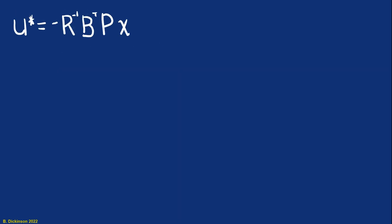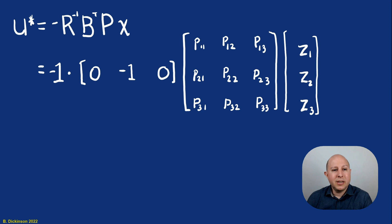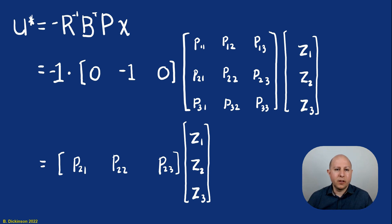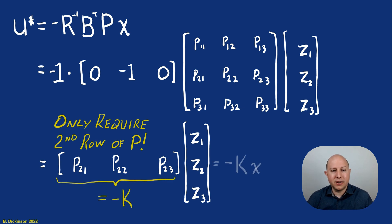There's our optimal control formula. And really what's needed is based off of what's in that R matrix and B matrix. When you multiply R inverse B transpose P together, notice that we just have the second row of P. We don't actually have to evaluate all of the elements of P with the polynomial substitution. We just need to do it for the second row. And that second row of P is also minus K in the state feedback law. U star is minus KX.